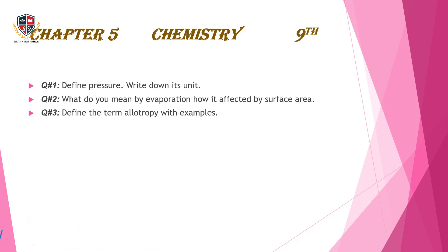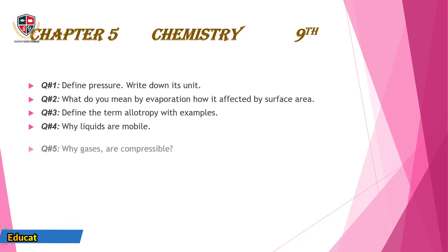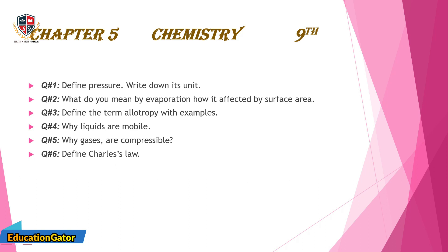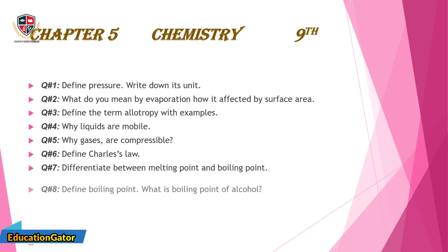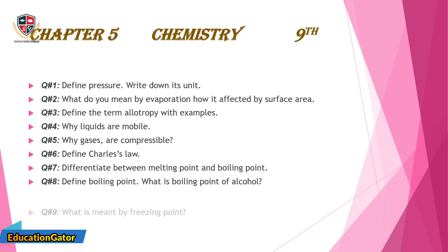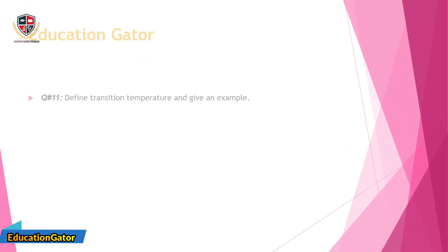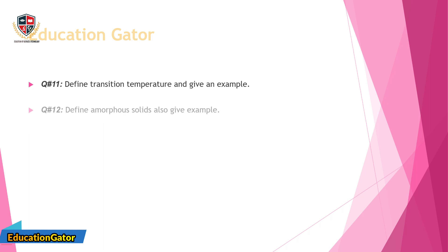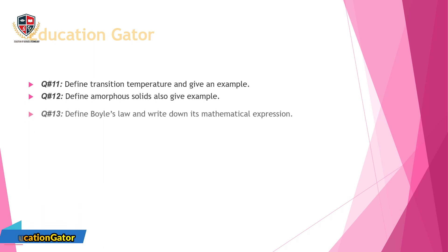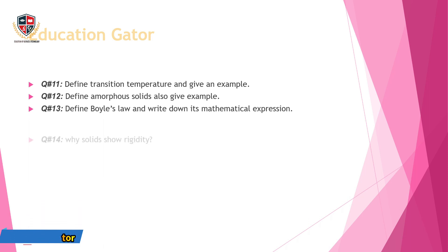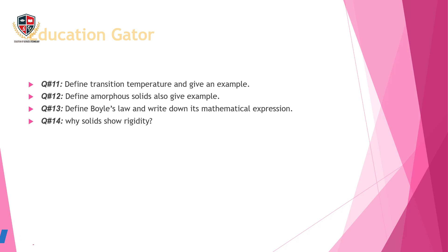Question 7: Differentiate between melting point and boiling point. Question 8: Define boiling point. What is the boiling point of alcohol? Question 9: What is meant by freezing point? Question 10: Define the term vapor pressure. Question 11: Define transition temperature and give an example. Question 12: Define amorphous solids and also give an example. Question 13: Define Boyle's law and write down its mathematical expression. Question 14: Why do solids show rigidity?